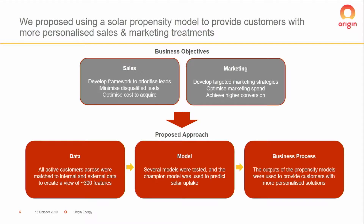A common challenge we face at Origin — and I think this is true of just about every large participant in the energy industry — is that while we have significant market share in traditional electricity and gas retail, this often doesn't translate into solar sales. Our market share is 30% for electricity and gas, and significantly smaller for solar. Our sales team felt they didn't have a framework to prioritize leads and were treating every customer the same. A lot of leads ended up being disqualified for logistical reasons, leading to a very expensive cost-to-acquire process. Our marketing teams echoed largely the same sentiments — they needed more targeted marketing strategies to achieve higher conversion and lower marketing spend.